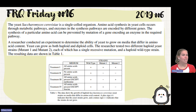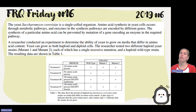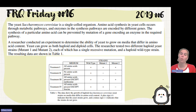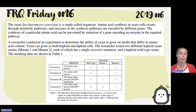We have this yeast, this single-celled organism. We're looking at amino acid synthesis in our yeast cells, through a metabolic pathway, and the enzymes in those pathways are encoded by different genes. The synthesis of a particular amino acid can be prevented by the mutation of a gene encoding an enzyme in the required pathway. A researcher conducted an experiment to determine the ability of yeast to grow on media that differs in amino acid content.